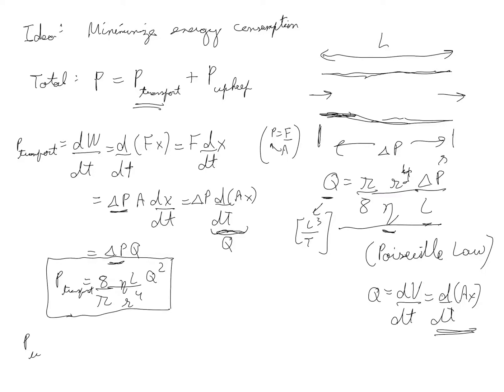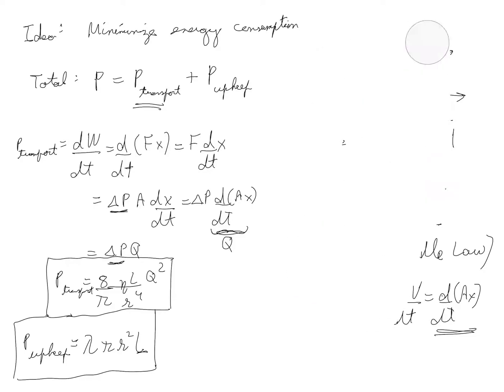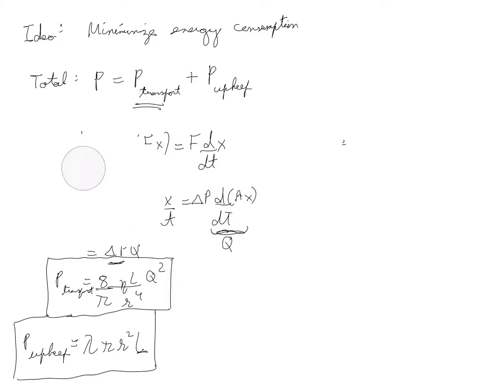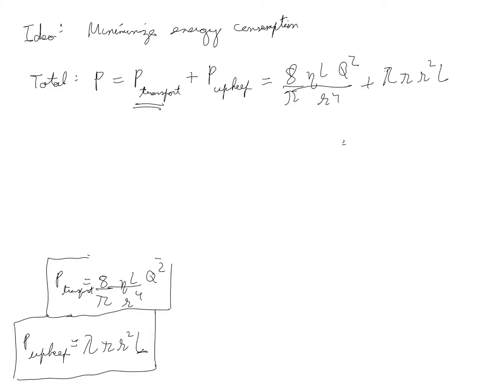Now P upkeep is the amount of energy required to keep the fluid alive. So that would be proportional to the volume of the pipe, pi r squared L times some constant lambda. So that's the other term. So we get 8 by pi eta L Q squared over r to the power 4 plus lambda pi r squared L. That's the total power required.